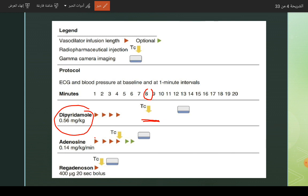The second drug is adenosine. Adenosine is given at 0.14 milligrams per kilogram per minute. Adenosine has fast elimination and fast uptake. The infusion period is four to six minutes, and after eight minutes from the beginning of infusion, we can do the imaging.